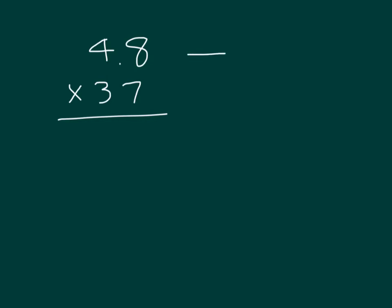If we multiply this by 10, 4.8 times 10, means we just move the decimal point, so we get 48 times 37. And then this product that we figure out will be 10 times more than what the actual answer should be, because we have multiplied it by 10 there.